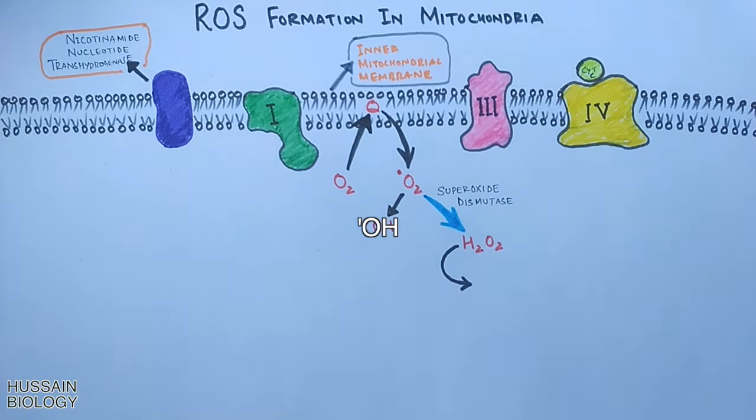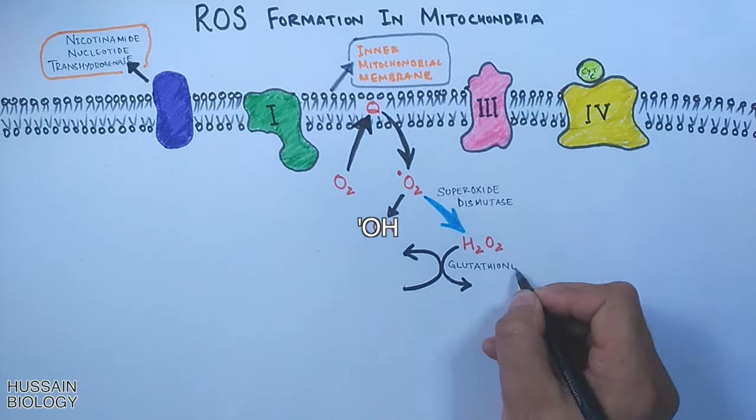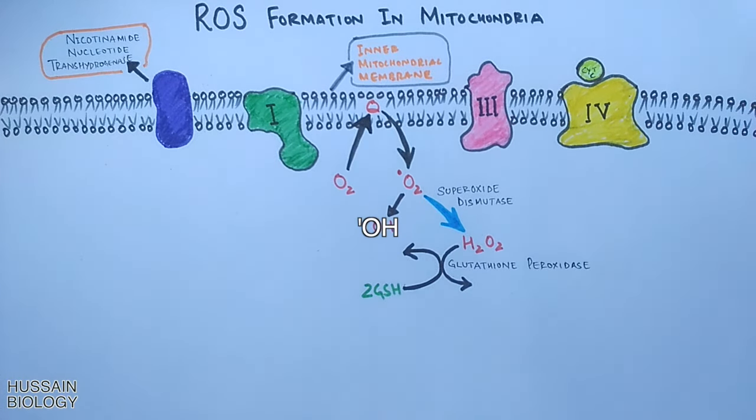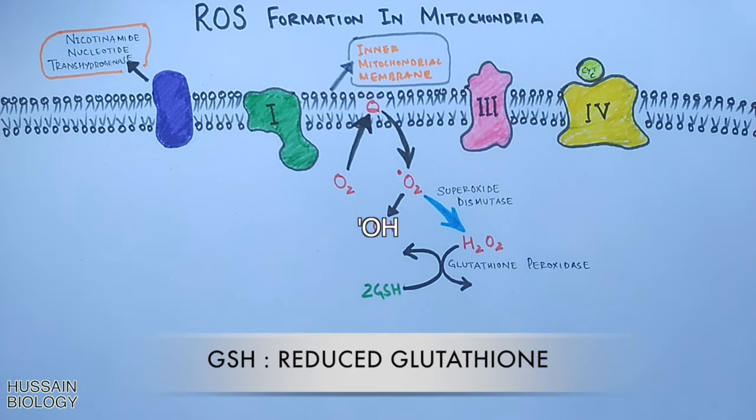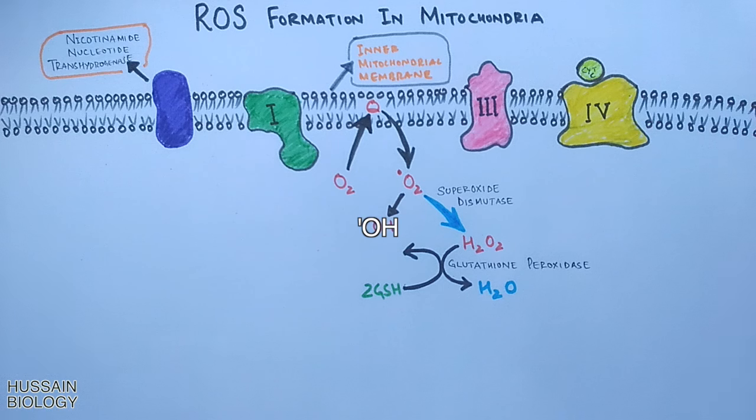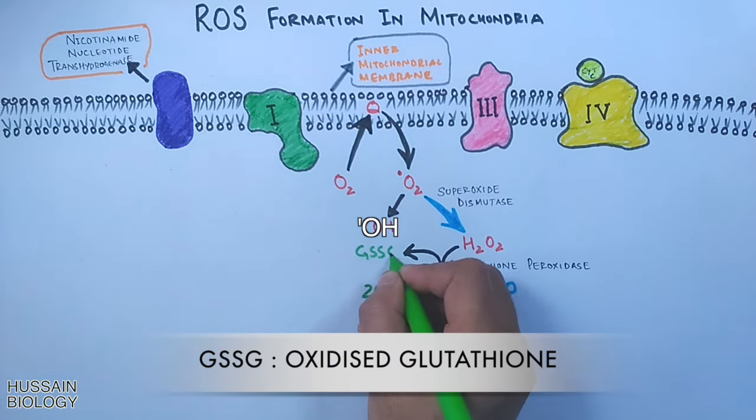We see reduced glutathione GSH donates electrons for the reduction of H2O2 by the action of glutathione peroxidase, and in that reaction we get the oxidized form of glutathione, GSSG.